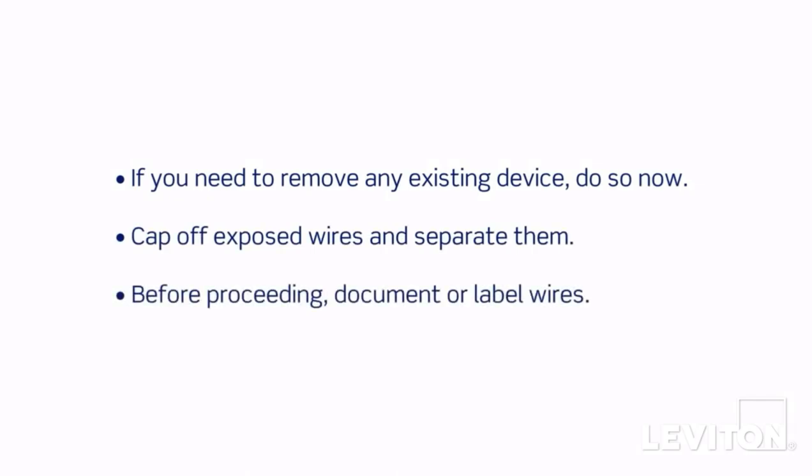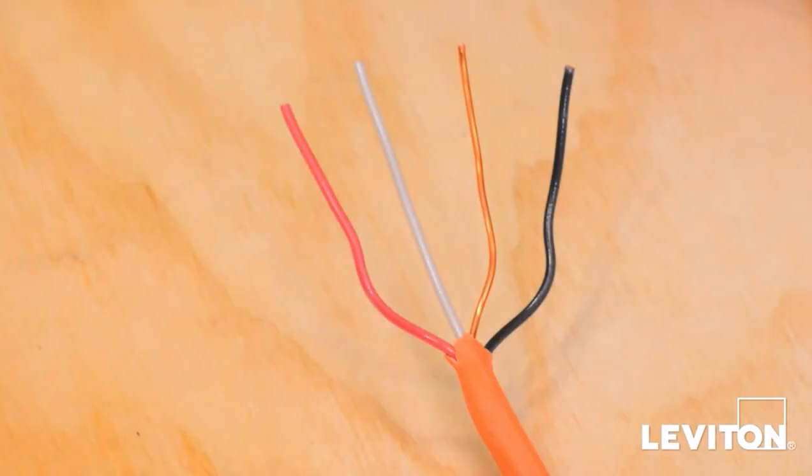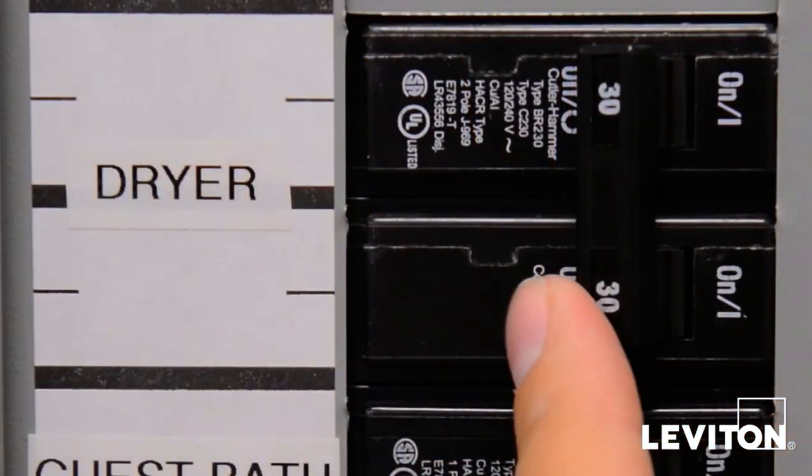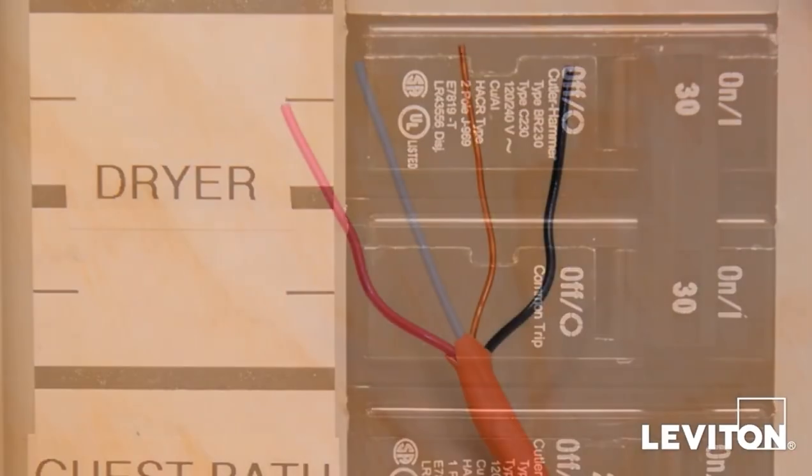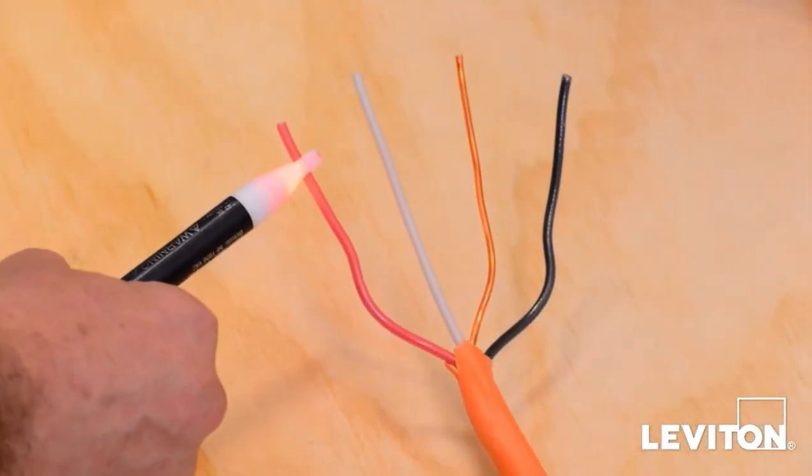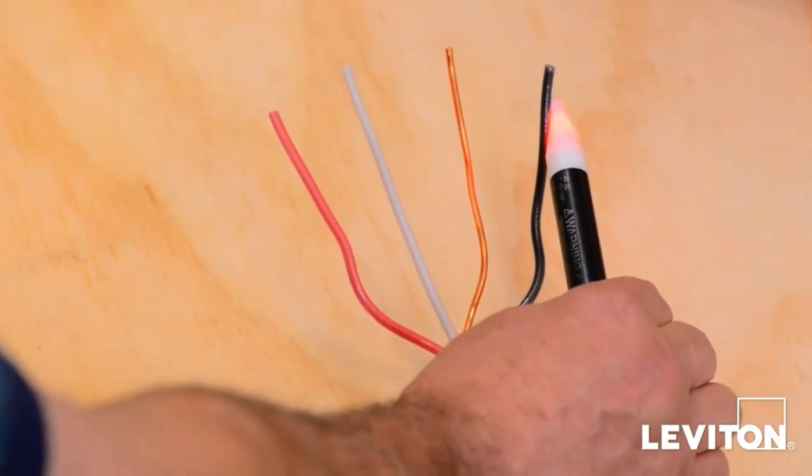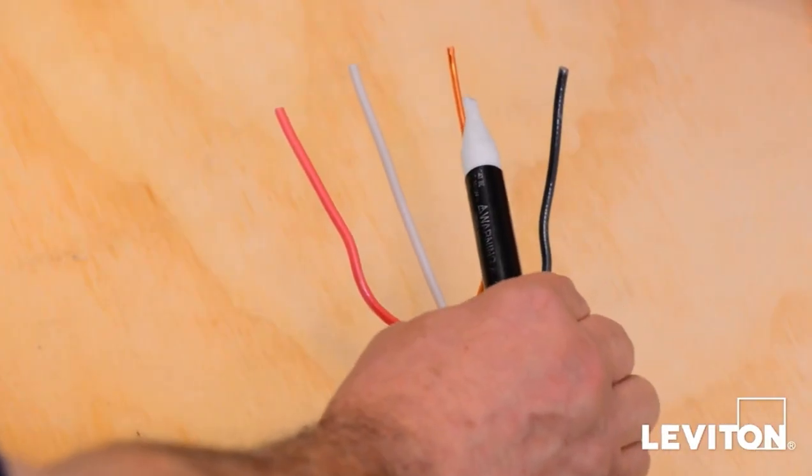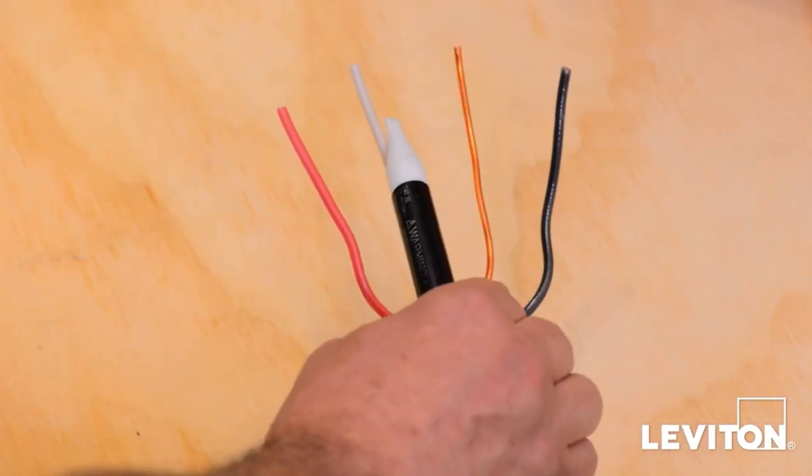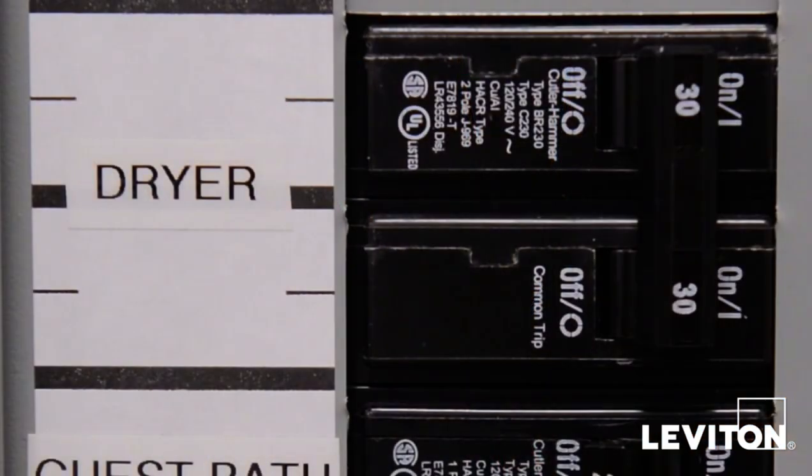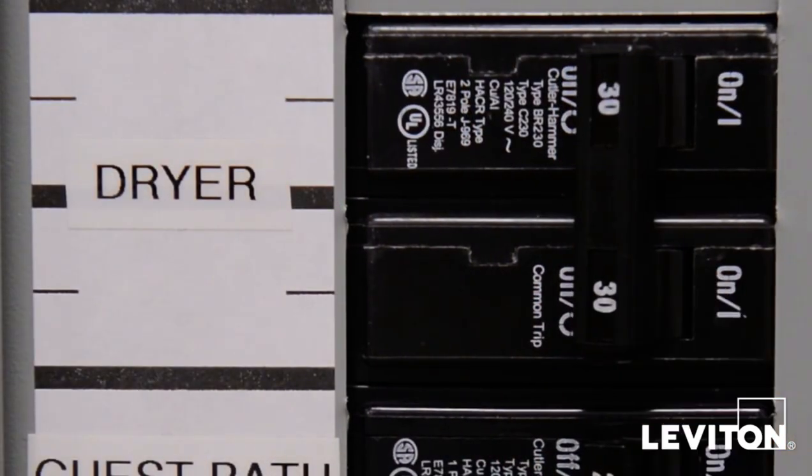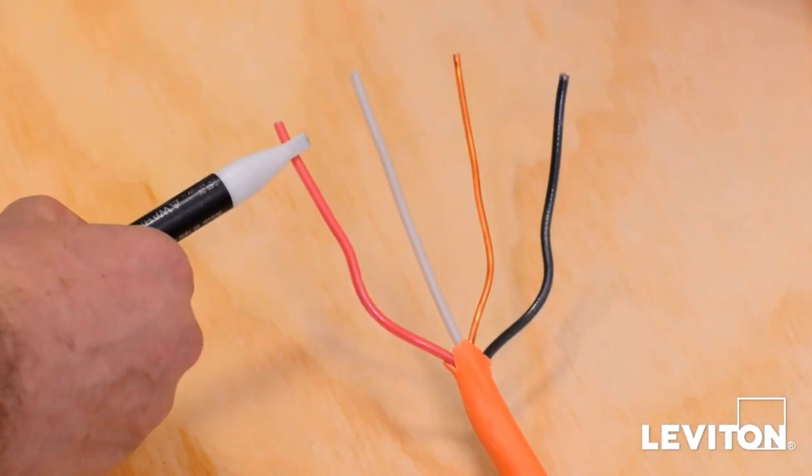Before proceeding, be sure to document or label wires for future reference. Now we need to identify the two hot wires. To do this, turn the circuit breaker back on. Carefully use the voltage tester to test each wire. The hot wires will be indicated by the tester. Once identified, turn off the circuit breaker to shut power and test to ensure the power is off.